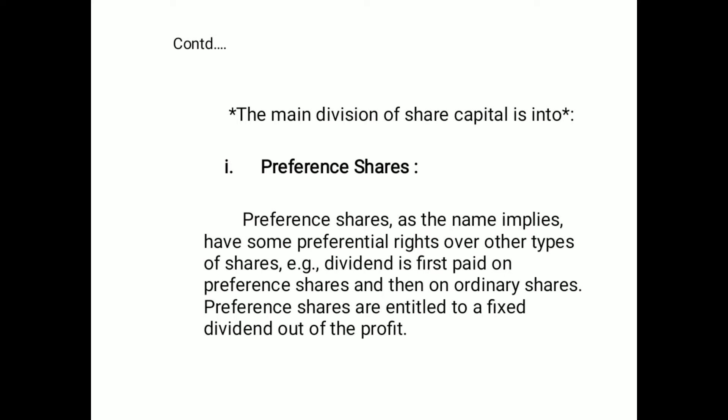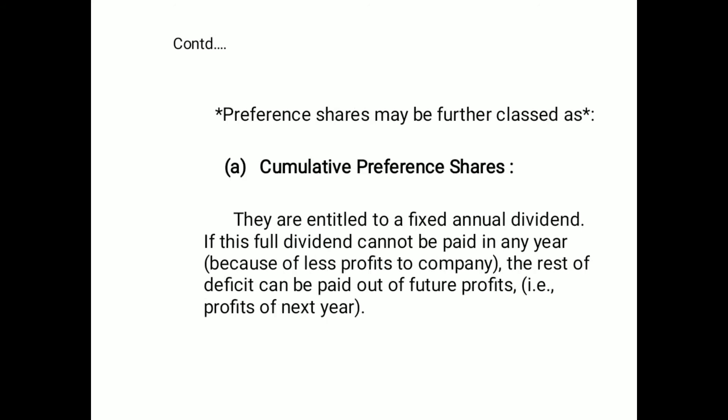For example, dividend is first paid on preference shares and then on ordinary shares. Preference shares are entitled to a fixed dividend out of the profit. Preferred shares may be further classified into several types.